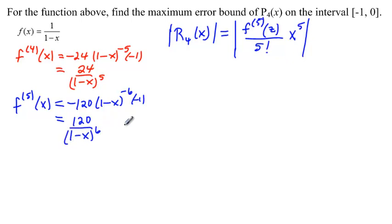Okay. So, what we need to do is figure out what this is going to look like, and if we go ahead and plug it into our error formula over here, what we have on top is 120 over 1 minus z to the sixth times, over 5 factorial times x to the fifth.